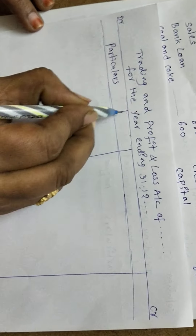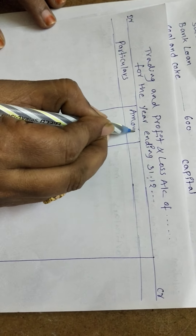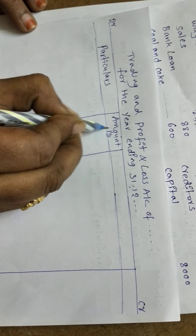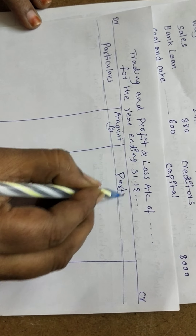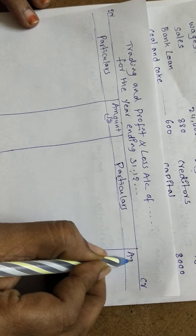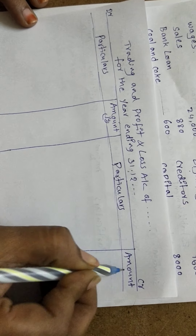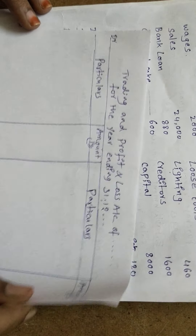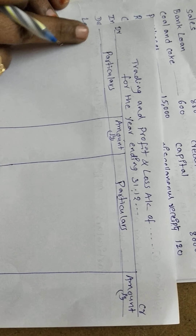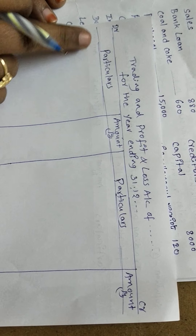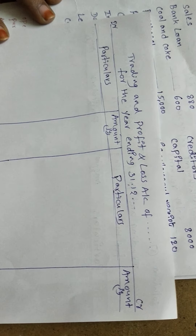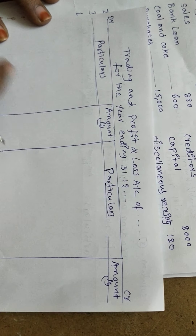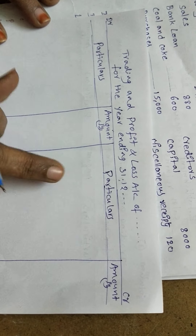The format has a debit side (DR) on the left and a credit side (CR) on the right, each with particulars and amount columns in rupees. As per the format, the debit side records opening stock, purchases, net purchases, and all direct expenses; the credit side records sales and closing stock.